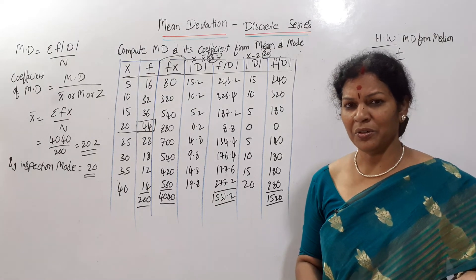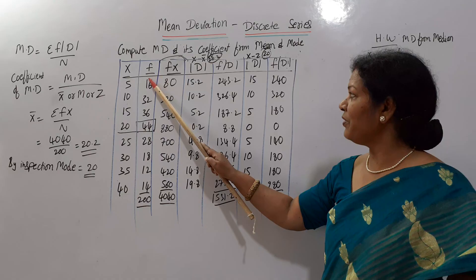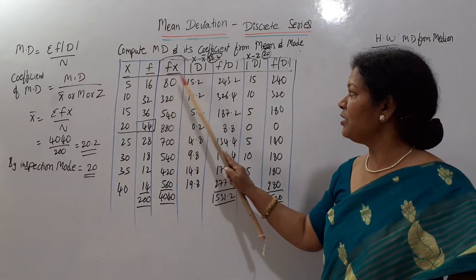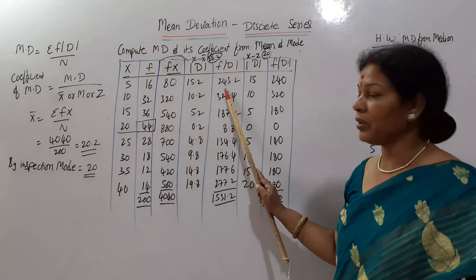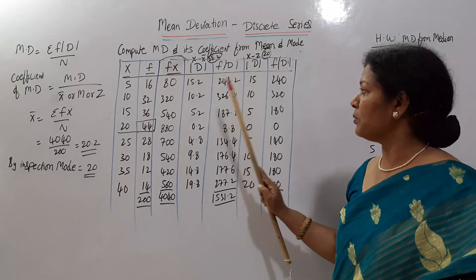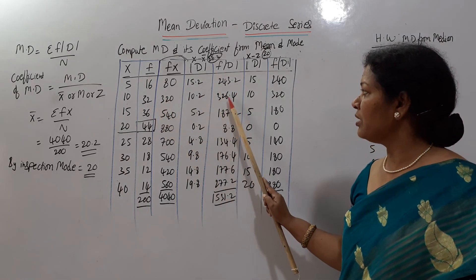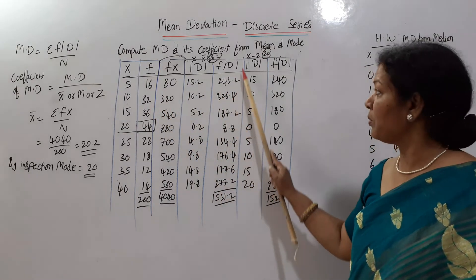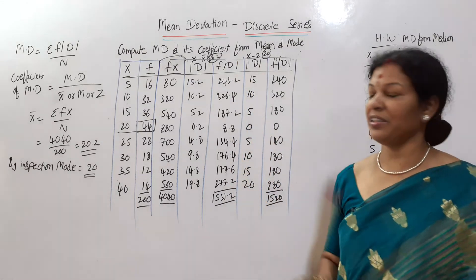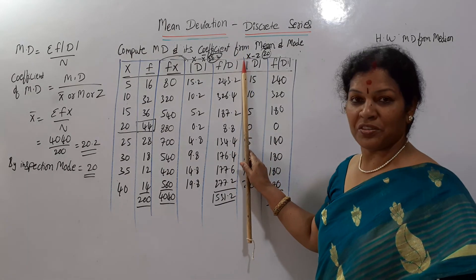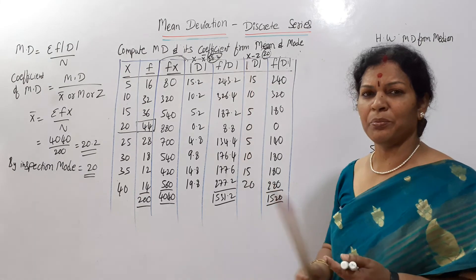Next we calculate f into mod d. 16 into 15.2 = 243.2; 32 into 10.2 = 326.2, and so on for each row. Once we get frequency into mod d for all values, we can calculate mean deviation.